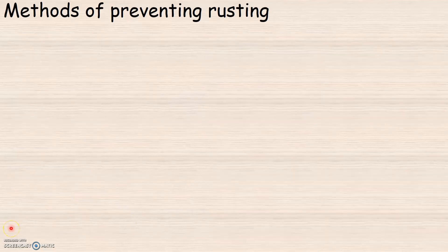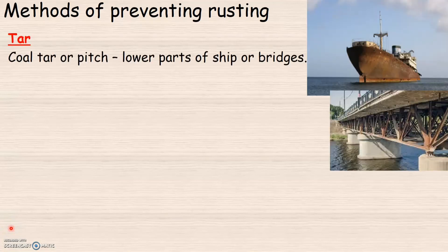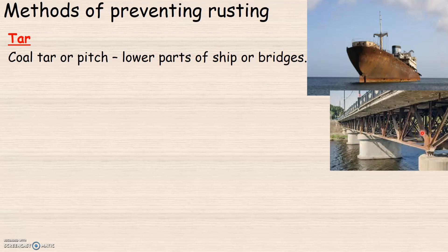The next non-metallic coating that can be applied on the surface of iron is coal tar or coal tar pitch. Coal tar or pitch is considered to be less expensive and long lasting compared to paint. That is why they are used especially on the unseen or lower parts of ships and bridges to prevent rusting.